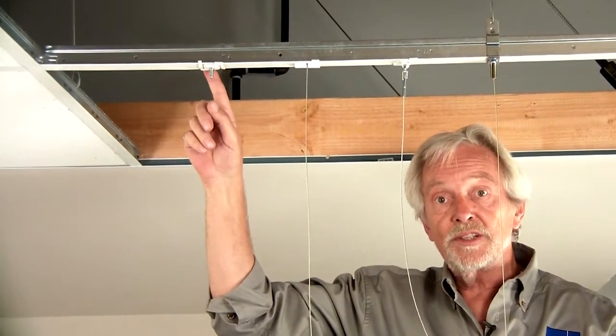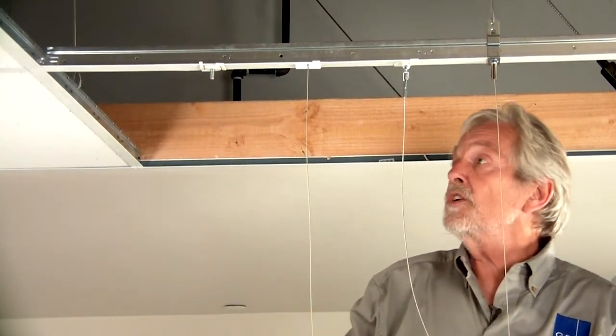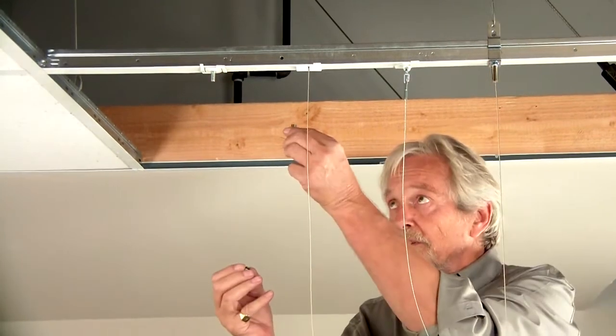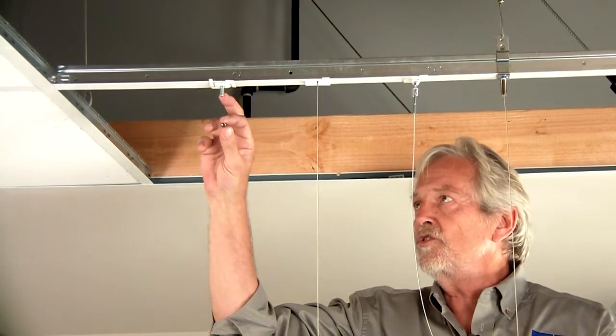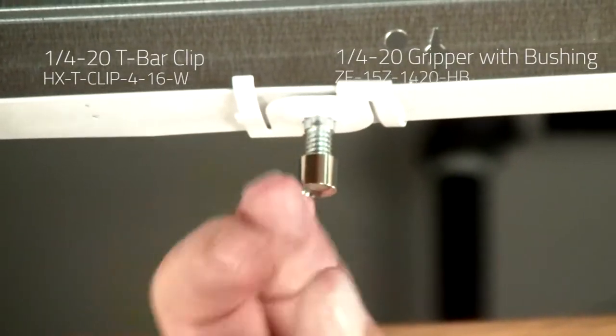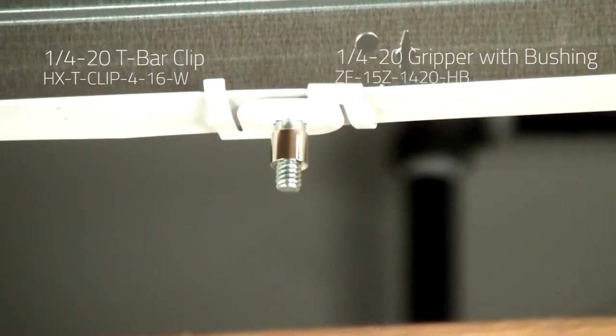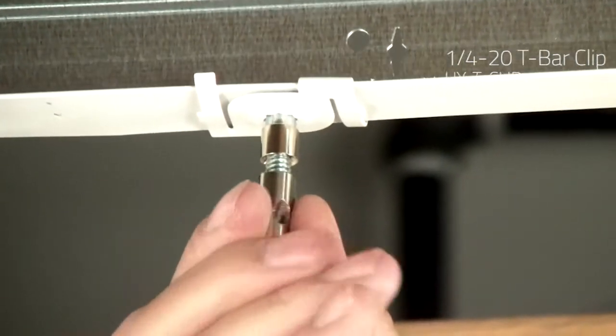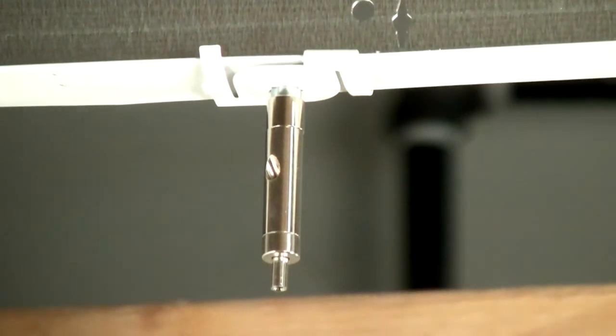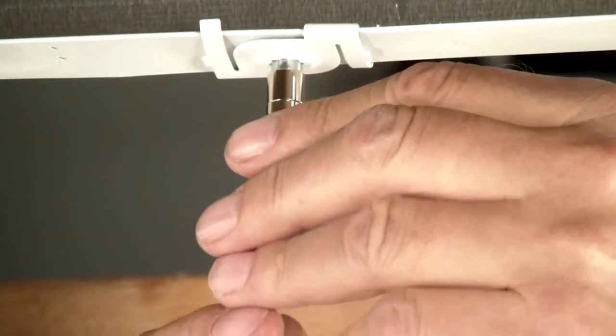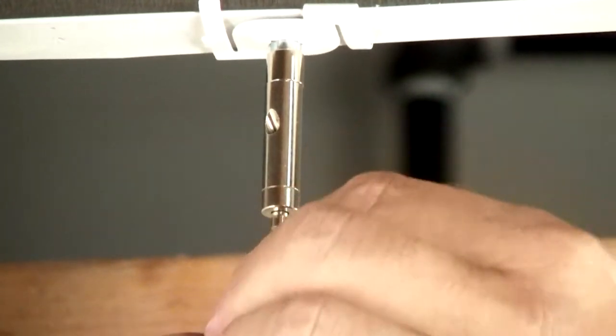Here's another one for which the weight loads are limited too. This is a standard T-Bar twist-on clip with a quarter-twenty stud. Here's a gripper that I'm going to turn onto it. But because the internal thread of the gripper is much shorter than the thread showing on the T-Bar clip, I'm going to put a little bushing in there. Some people would care, some people wouldn't care. I care. Then you can take a piece of cable and just feed it into the gripper. And there you have it.